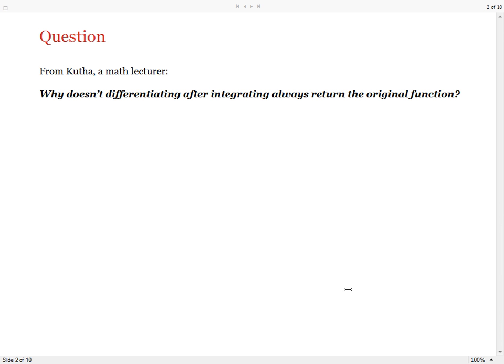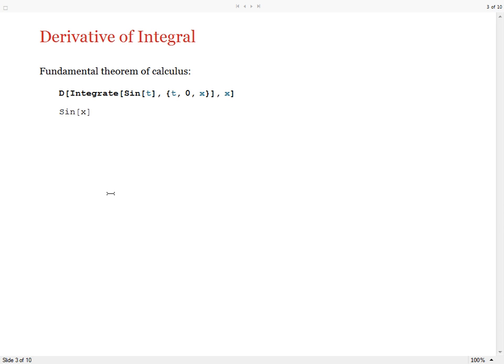Our question is about calculus in Mathematica. Why doesn't differentiating after integrating always return the original function? If you take the derivative of an integral like this one with respect to its upper bound, and the lower bound is a constant such as 0, then the result is equal to the original function. This is a consequence of the fundamental theorem of calculus.